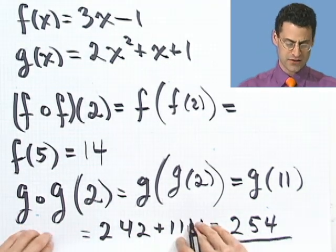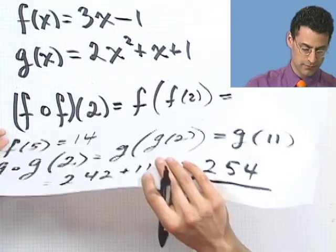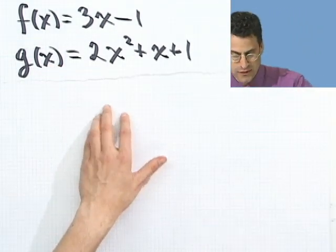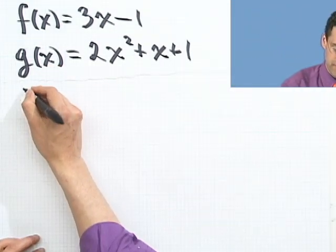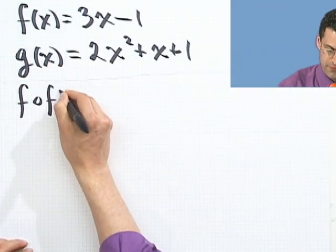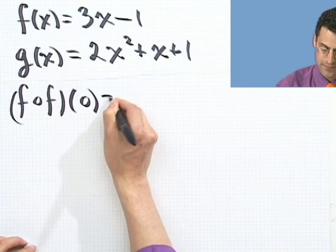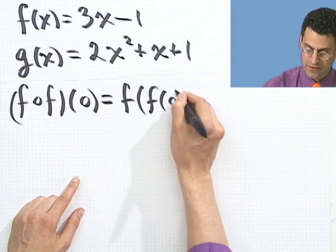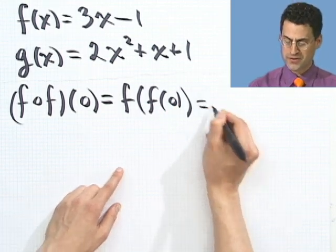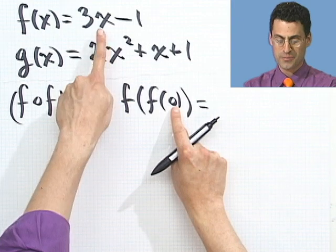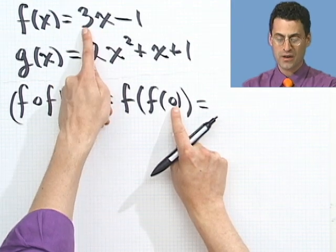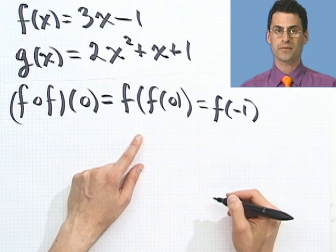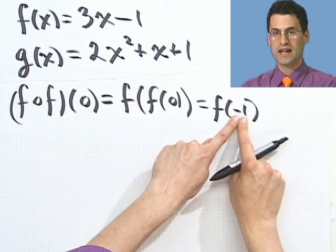So that would be g composed with g evaluated at 2. Not a problem. How about, let's try some more. How about this one? How about f composed with f evaluated at 0? So that means f of f of 0. So first, what do I do? So first I take 0 and plug it in for x in f. When I do that, I see 3 times 0 minus 1. So that's just negative 1. So I have f of negative 1.